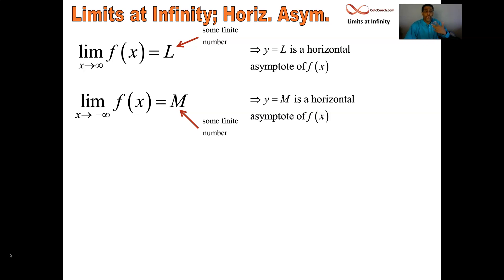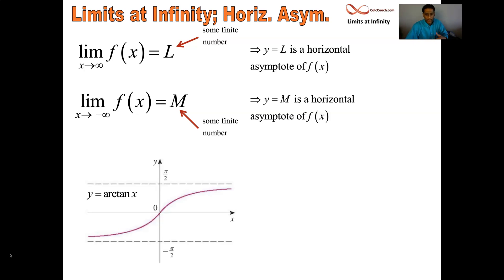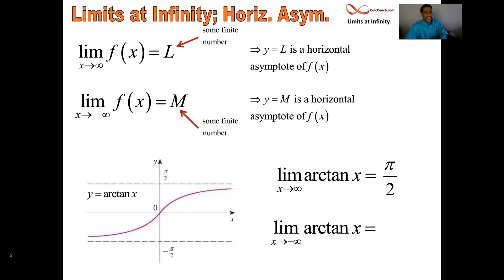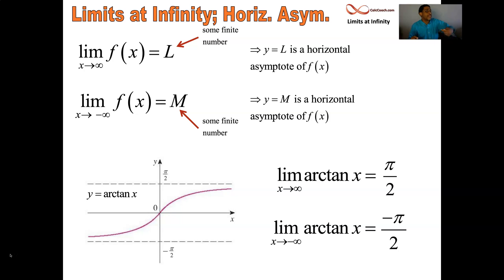Some functions have multiple horizontal asymptotes, the most famous of which would be y equals arctan(x). As x approaches infinity, the arctan will approach π/2. As x approaches negative infinity, the arctan function will approach −π/2. Remember, it's the inverse of tan, so it switches the inputs and output values for y equals tan(x). As x approaches π/2, you shoot off to infinity; as x approaches −π/2, you shoot off to negative infinity — flip those inputs and outputs and you end up with this result.